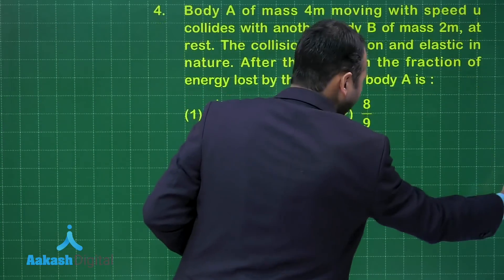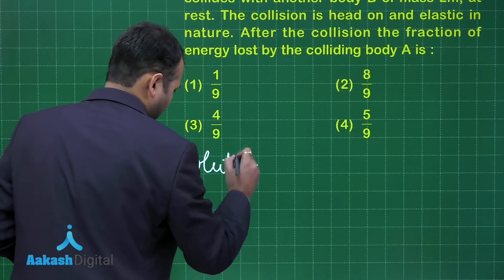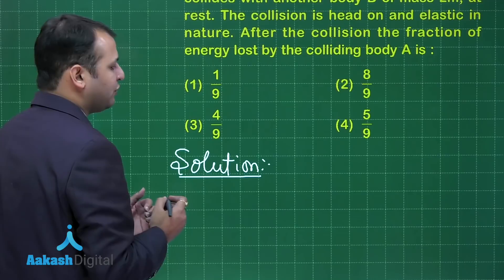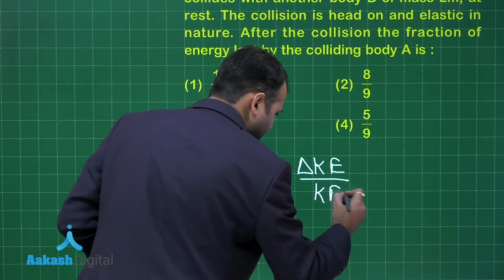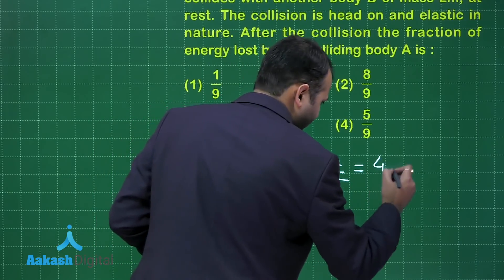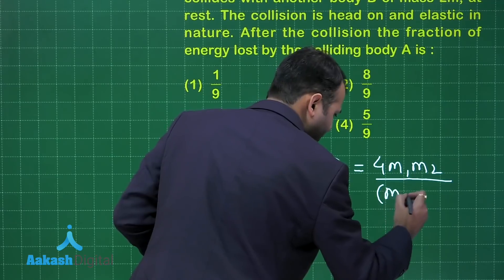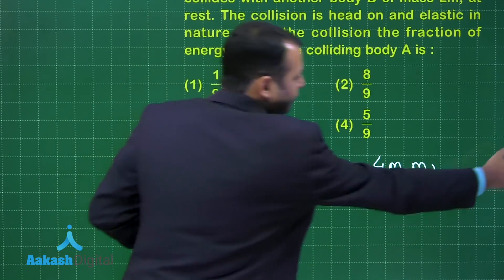So we have a direct formula for this part. Let's see. So if you want to see what is the fraction of energy loss, it is directly delta KE divided by kinetic energy, it is given by 4 m1 m2 divided by m1 plus m2 whole square.